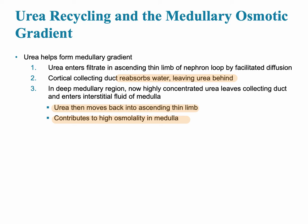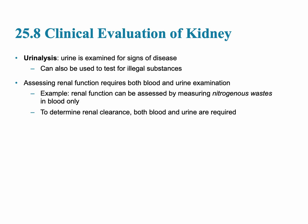Clinical evaluation of the kidney is usually done with a urinalysis, using a urine sample from the patient. It can test for abnormal renal function by measuring nitrogenous waste. These wastes should remain in the blood only, but if there is damage to the glomerular membrane, nitrogenous wastes can make their way through the renal tubule and end up in the urine.